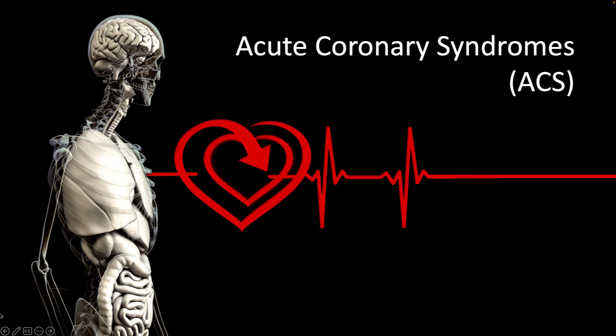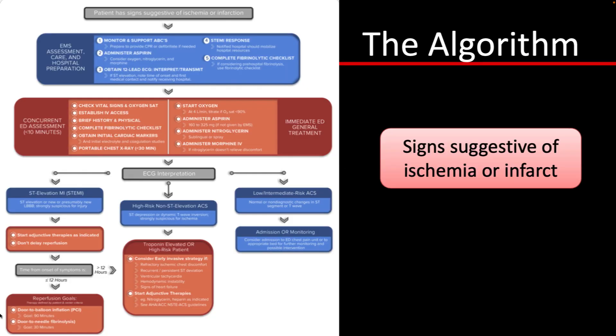Acute coronary syndrome is a term that describes a range of conditions related to sudden reduced blood flow to the heart. The most common symptom is chest pain or discomfort. This is often described as aching, pressure, tightness, or burning.